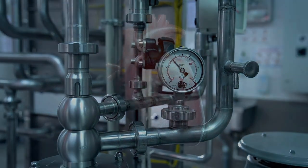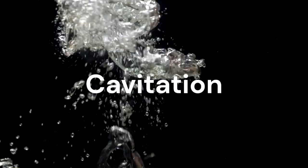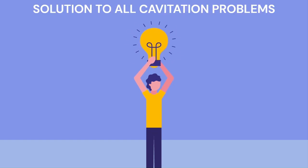In any industrial plant, control valves are at the heart of any control loop, and the number one problem in control valves is cavitation. As requested, all the cavitation solutions are combined in one place, so it's a one-stop solution to all cavitation problems. Let's get started.